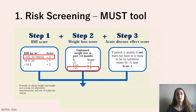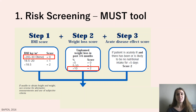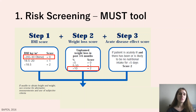Moving on to step three, this is the acute disease effect score. She may be acutely ill, but more importantly she reports that she is avoiding food in order to avoid the dumping syndrome symptoms. The dumping syndrome itself also affects the absorption of food. So both of those give her a score of two for step three.